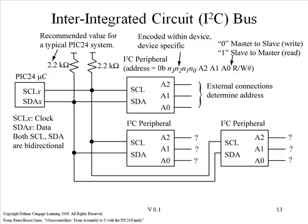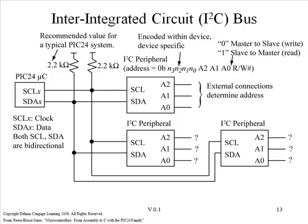For the bus to work, we need to make two specific connections. The serial clock line, SCL, needs to be connected to the SCL on each I2C peripheral on the bus. In addition, it's essential that pull-up resistors — one for the serial clock line and one for the serial data line — be included in the design, because of the nature of I2C. It's fundamentally an open collector bus.